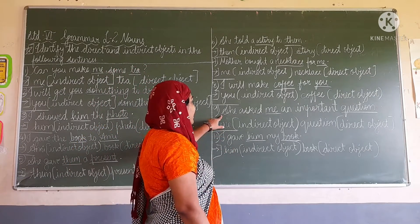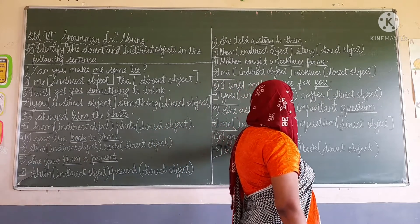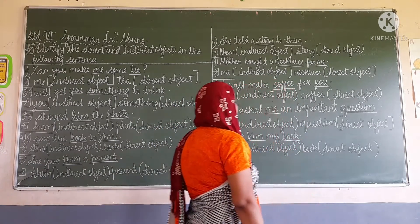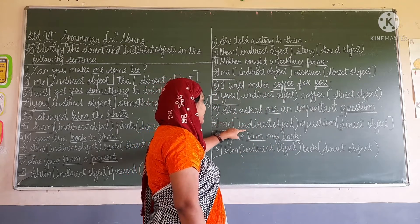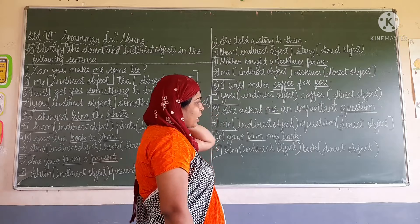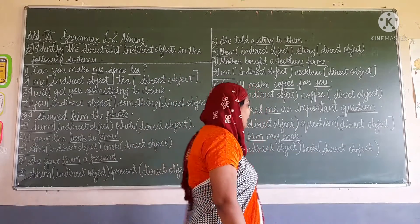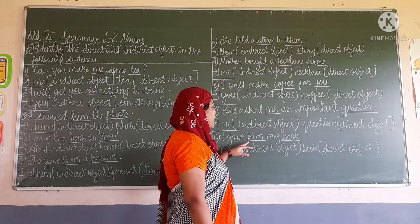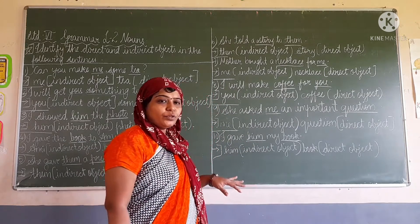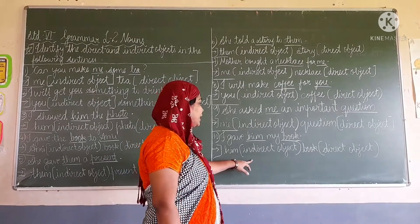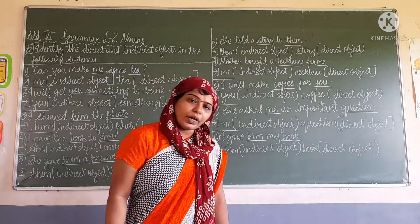She asks me an important question. Here 'me' is the person, so 'me' is the indirect object and the receiver of the action is 'question' — so it is the direct object. Next: I gave him my book. 'Him' is used for a person, so 'him' is the indirect object and 'book' is the direct object.